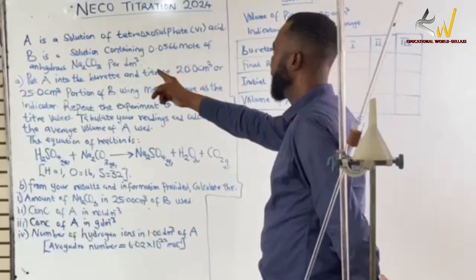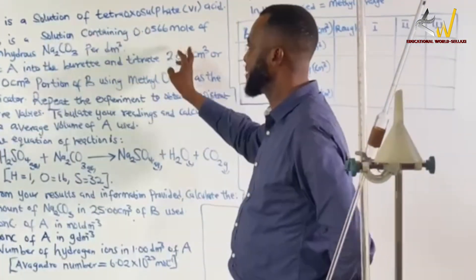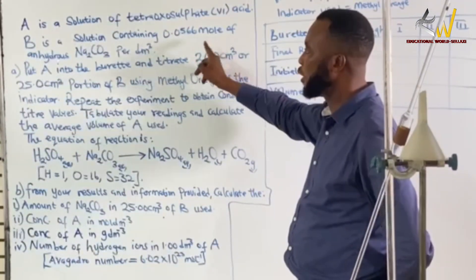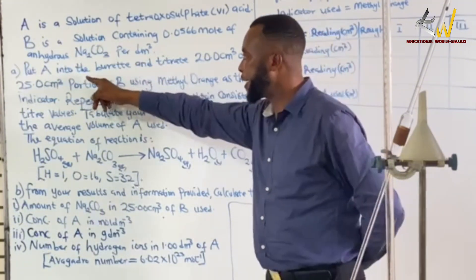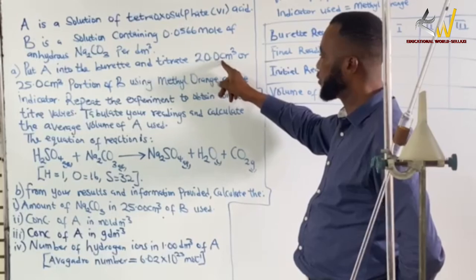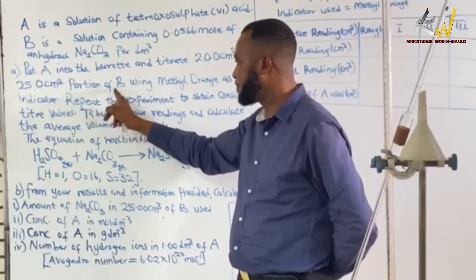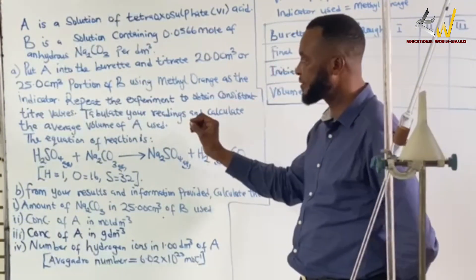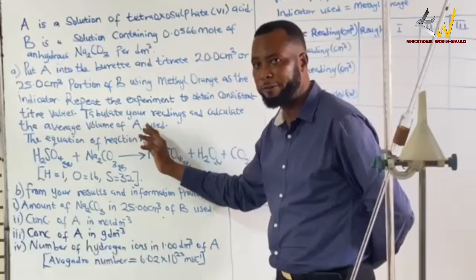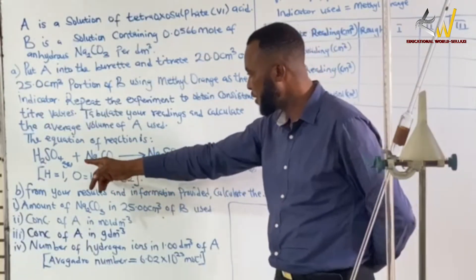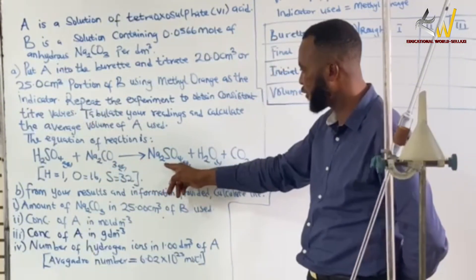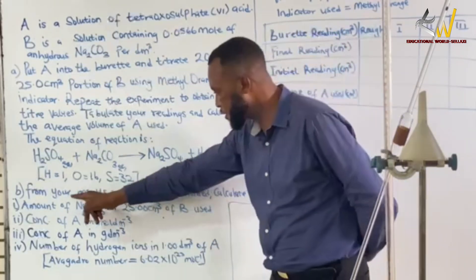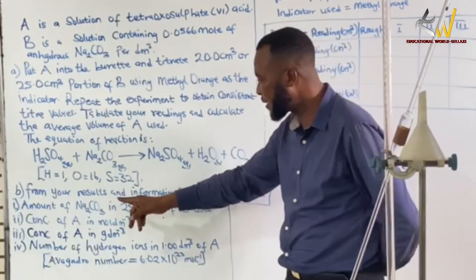The question states: solution A is tetraoxosulfate(VI) acid, and solution B is sodium carbonate at 0.05 mol/dm³. We use methyl orange as indicator. The experiment is to obtain concordant titre readings. The equation is: H₂SO₄ + Na₂CO₃ → Na₂SO₄ + H₂O + CO₂.